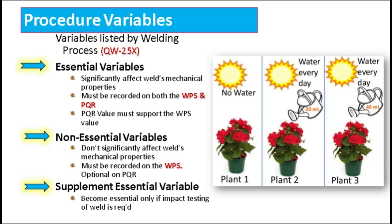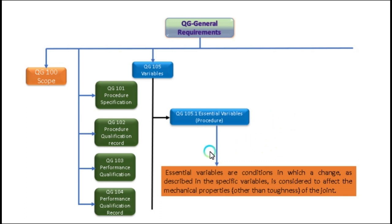We can correlate the variables with an example — just as if we don't meet all variables it will affect the growth of a plant, similarly, if we have good control on our welding variables, we can achieve the desired quality of the weld in terms of mechanical properties as well as soundness. ASME Section 9 QG105.1 defines the essential variable as: a condition in which a change, as described in the specific variable, is considered to affect the mechanical properties other than toughness of the joint.